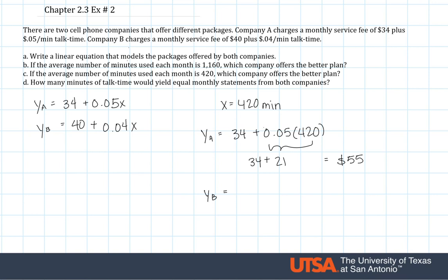Then for company B, we have $40 plus the minute rate times 420. This gives me 16.8 plus 40. And then this is 56.8. So for a less amount of time, 420 minutes, company A is going to be the better plan.